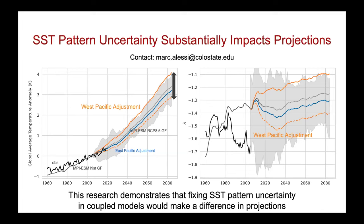Nick makes a comment: this is really interesting because the conventional wisdom is that once emissions go to zero, warming will stop. This research adds ammunition to skepticism about that — if the pattern shifts, even with no emissions, you can still get some warming. Mark agrees: if the pattern kept shifting in a way conducive to warming, that would be the case. This is important because everyone says once emissions get to zero, warming will stop and we can stay below 1.5 degrees.